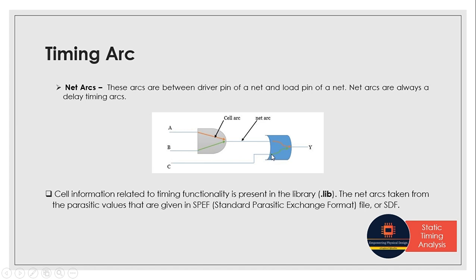Whatever happens between the cells — from the source pin (output of the first cell) to the sink pin (input of the next cell) — represents the net arc. Also, all timing information related to cells is present in the library or .lib file, while net delay information derived from parasitic values is present in either the SPEF file or the SDF file.